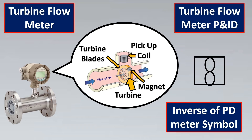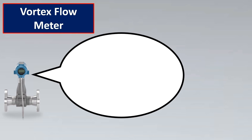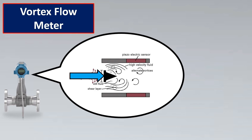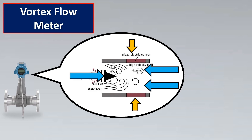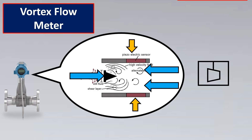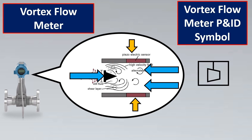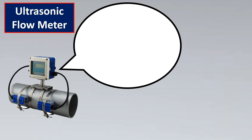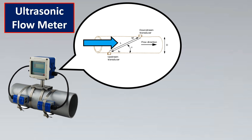For the vortex flow meter, a bluff body is placed in between the flow path, creating alternating vortices. The higher the flow, the higher the frequency of vortices, which are detected by a piezoelectric crystal. The most important element — the bluff body — has been used for the P&ID symbol along with the pipe body. This is your vortex flow meter P&ID symbol.